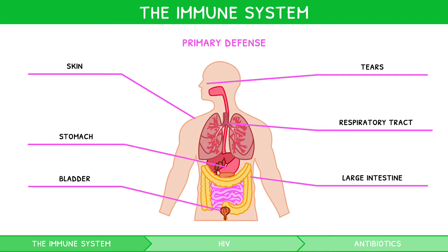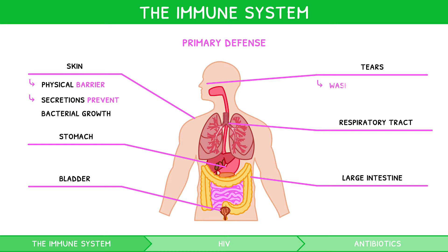The skin is a thick outer layer that forms a physical barrier against pathogen entry. It contains sebaceous glands that secrete lactic acid and fatty acids to also prevent bacterial growth. Tears wash away irritants and microbes and contain lysozyme, an enzyme that kills bacteria.